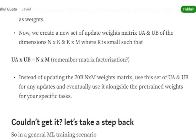Instead of updating the 70 billion N×M weights matrix, we update UA and UB for any updates while training and eventually use it alongside the pre-trained weights for the specific task.